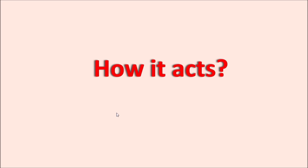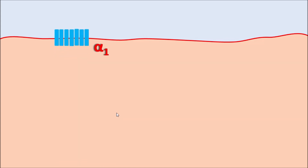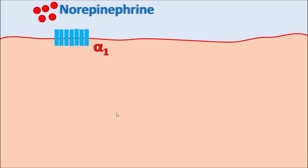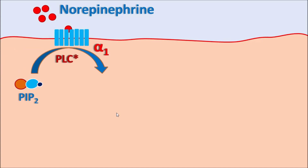Now let us see how this drug acts. Terazosin mainly acts on vascular smooth muscle, bladder neck, and prostate tissue. At all these locations, alpha-1 receptors are present, which are G protein-coupled receptors with 7 transmembrane units. Norepinephrine released by neuronal stimulation can bind to these alpha-1 receptors, which activates the phospholipase C system. Phospholipase C is a cleavage enzyme that cleaves phosphatidylinositol bisphosphate into two important components: IP3 (inositol triphosphate) and DAG (diacylglycerol).